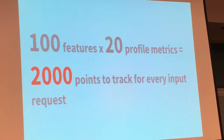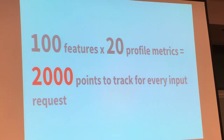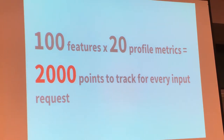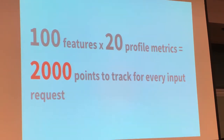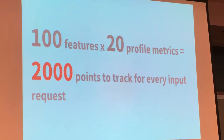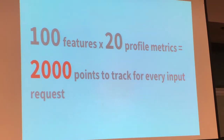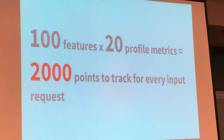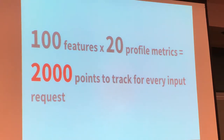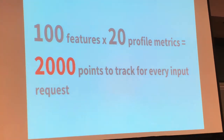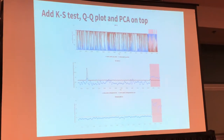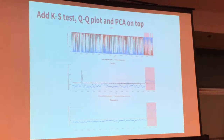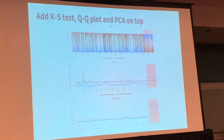This can work for classical machine learning use cases when you have an input of just plain feature vectors. If we have 100 features and every feature generates 20 profile metrics, we have 2,000 metrics and data points to track on every input request. The data volume is increasing dramatically and it doesn't make sense for people to watch those 2,000 metrics on the screen. In general, what we can do is apply more advanced statistical techniques like PCA and QQ plots to reduce dimensionality and the number of points we track to make a decision.